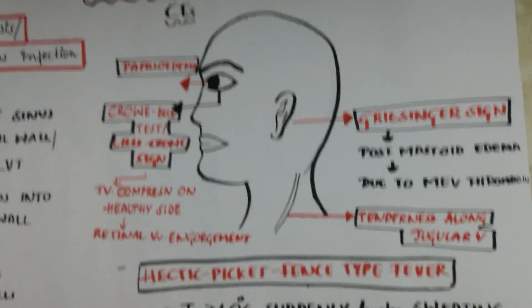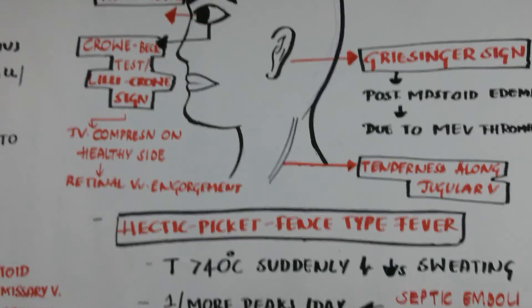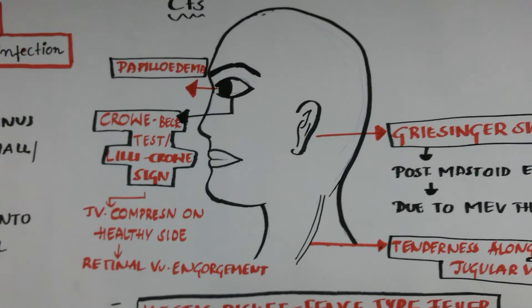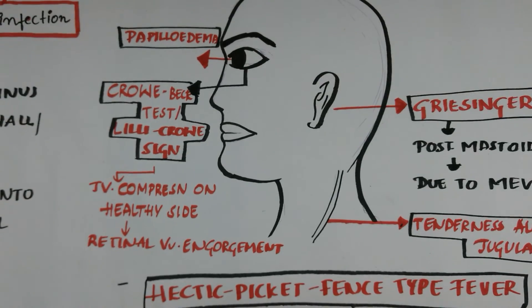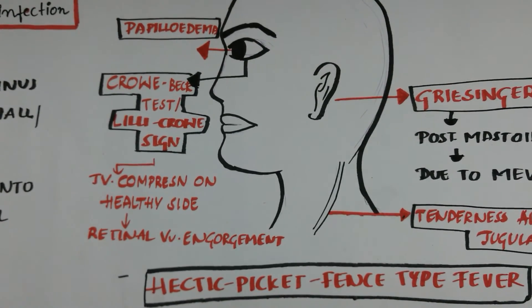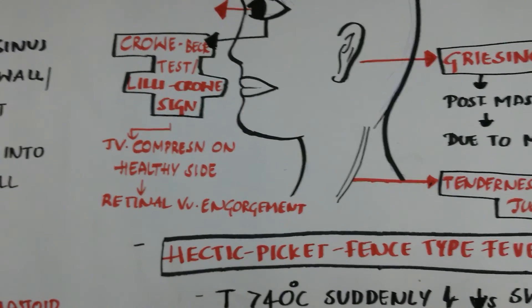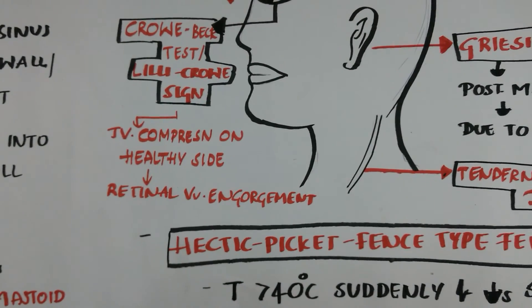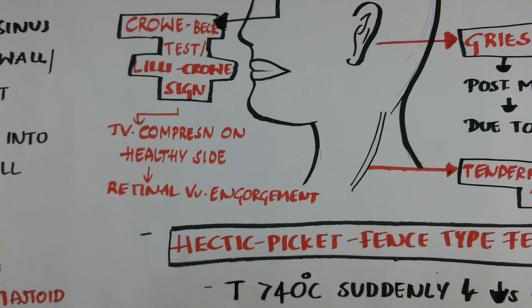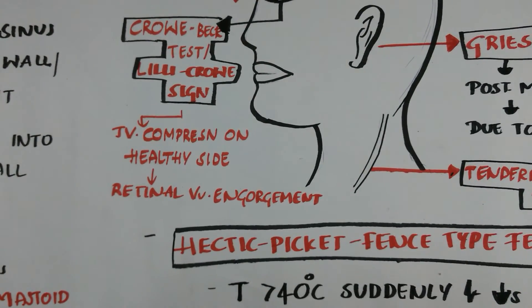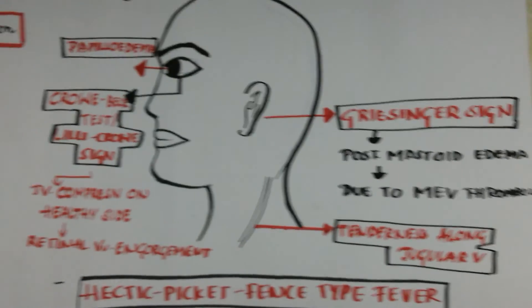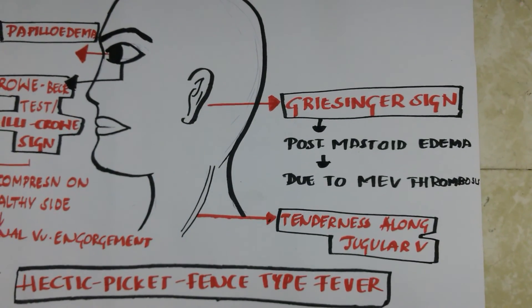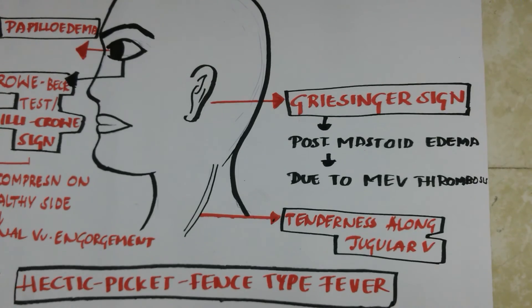Clinical features: Papilledema occurs due to increased intracranial pressure. The Crobb's test or Lily Crow sign is performed by compressing the jugular vein on the healthy side — retinal vein engorgement occurs and subsides on releasing pressure. Grissinger sign refers to posterior mastoid edema due to mastoid emissary vein thrombosis.